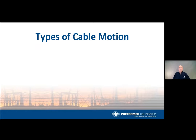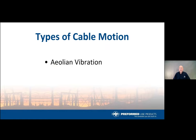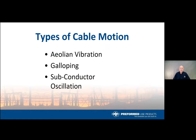The types of motion we will cover that are specifically focused on in electrical systems are aeolian vibration, galloping, and subconductor oscillation. However, because we're limited on time today, we're going to focus on aeolian vibration, as it's the most important for most people watching. Subconductor oscillation is typically applicable to bundled conductor systems found in EHV transmission systems, so we'll bypass that today.